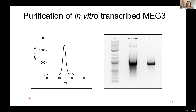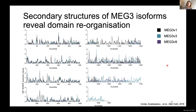Using this method, we established purification protocols for the three MEG3 splicing isoforms. We keep only the peak fraction from the size exclusion chromatogram, and as shown on this agarose gel, the RNA reaches high purity and migrates as a clear sharp band. By employing this method, my colleague Tina Roda and I probed the secondary structures of the three different MEG3 splicing isoforms.